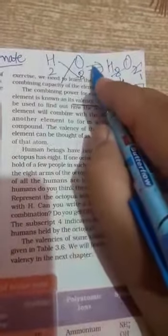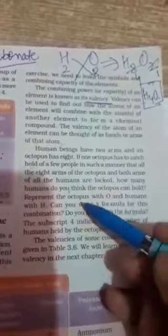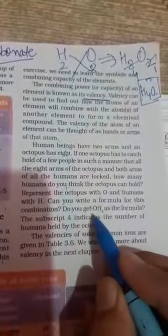So H4O is the chemical compound formed between H and O. We represent the human being by H and octopus by O. This is how we can get the answer H4O. Clear?